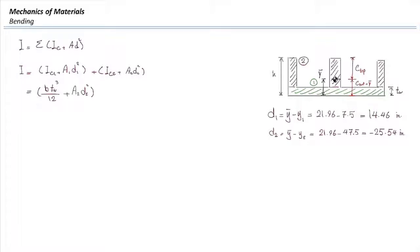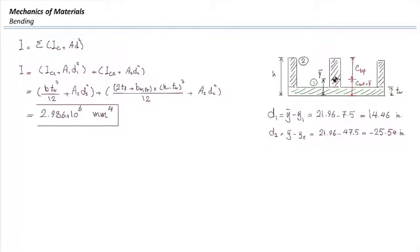Area and D1 are already determined, so I can plug the numbers. For the second part, the width is the sum of the three segments: 2 multiplied by TF plus the transformed wood width. Height is H minus TW. We use the cube of that value divided by 12, plus Area 2 multiplied by D2 squared. Plugging all the parameters, we get 2.986 million mm⁴. This is the moment of inertia for the transformed section.